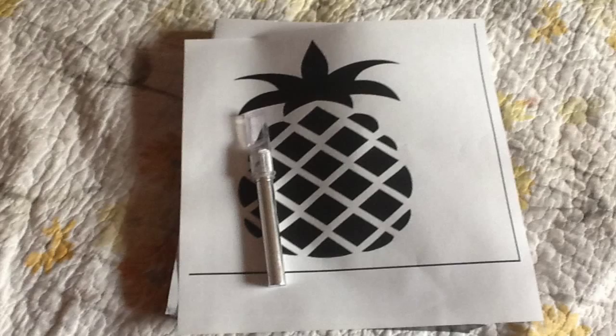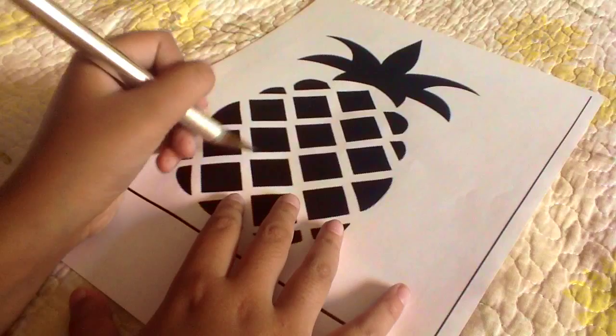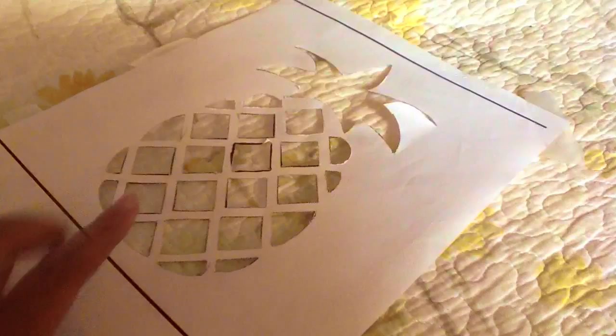Start by cutting out all the black spots on your piece of paper with your exacto knife. Now it should look something like this. Now tape the stencil onto your canvas.